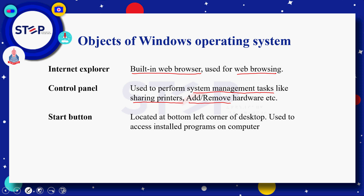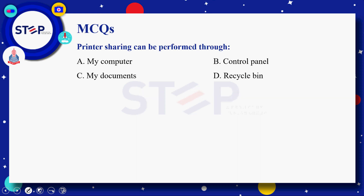Start menu — start menu normally آپ کے desktop screen کے bottom left corner کے اوپر located ہوتا ہے اور اس کا main مقصد آپ کے computer کے اندر جتنے بھی most commonly used programs ہیں ان کو access کرنے کے لئے استعمال ہوتا ہے۔